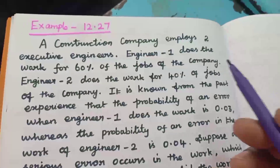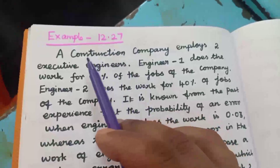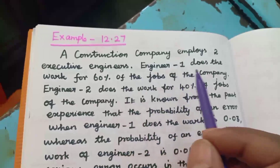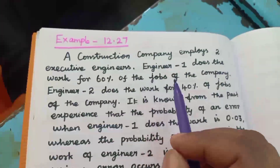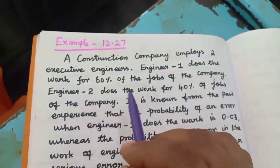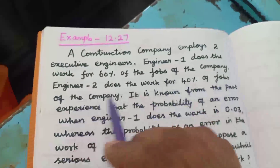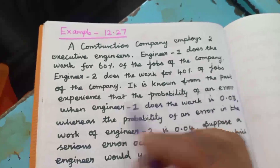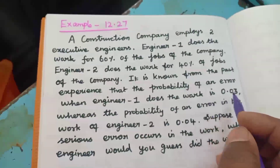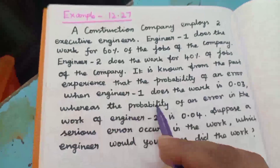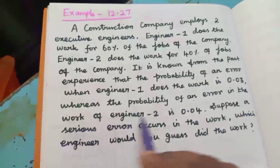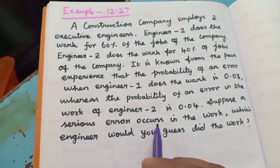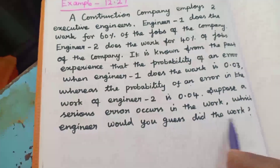Good morning students. Let me go for example 12.27. A construction company employs two executive engineers. Engineer 1 does the work for 60% of jobs of the company. Engineer 2 does the work for 40% of the jobs. From past experience, the probability of an error when engineer 1 does the work is 0.03, whereas the probability of an error in the work of engineer 2 is 0.04. Suppose a serious error occurs in the work — which engineer would you guess did the work?